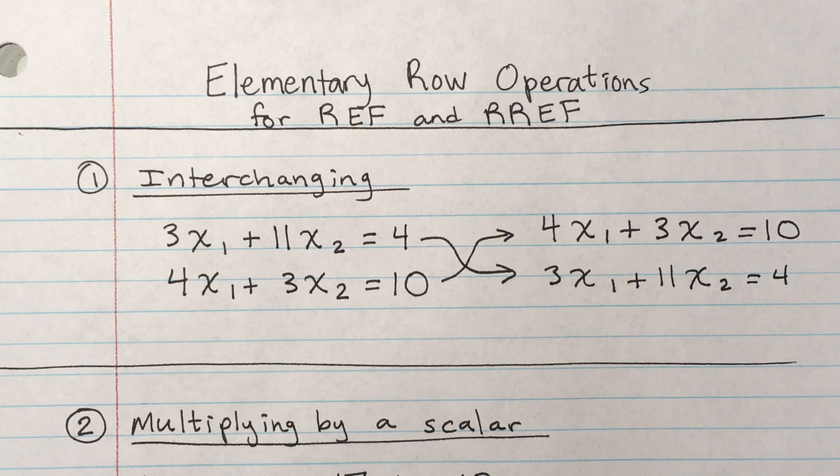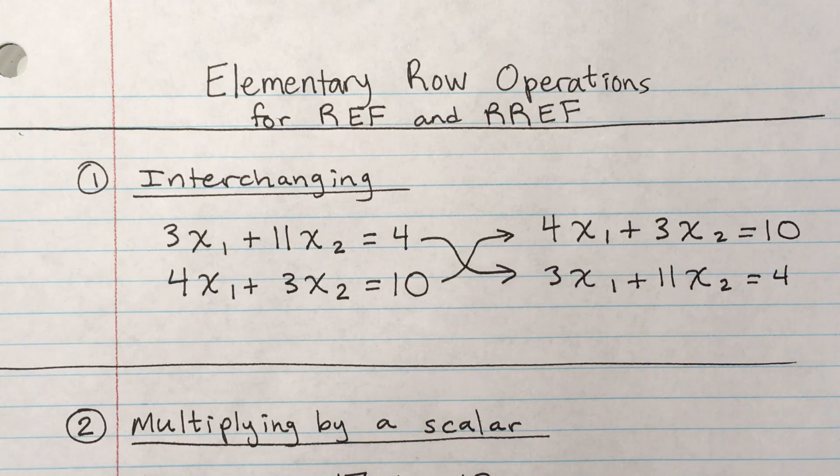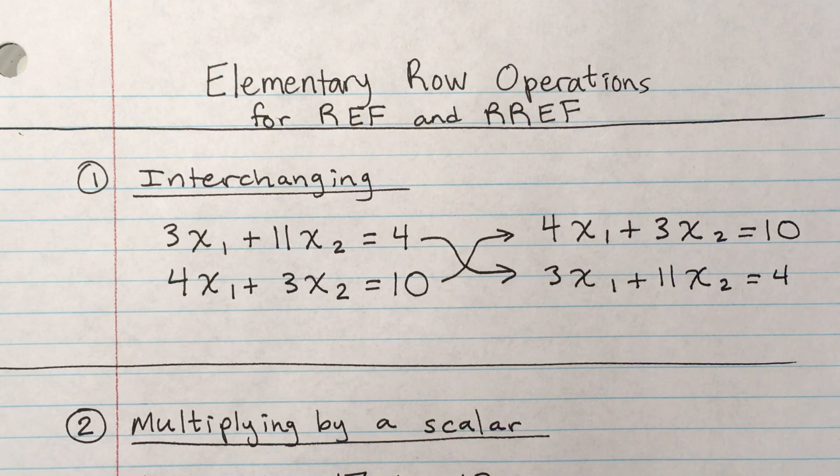So there are three rules that you need to be aware of when you're looking at a system that could help you make good decisions in terms of simplifying that system into REF or RREF.